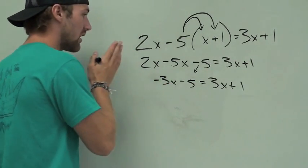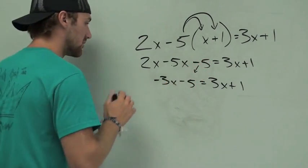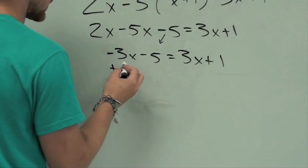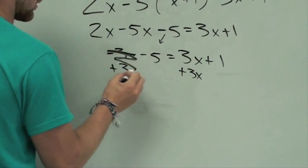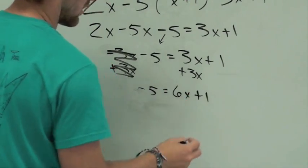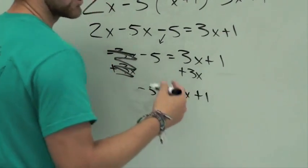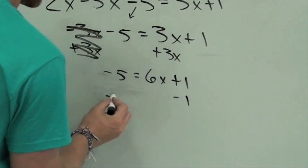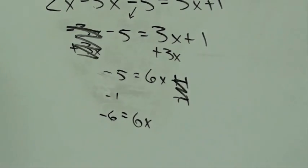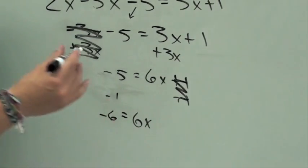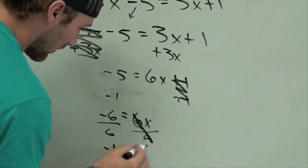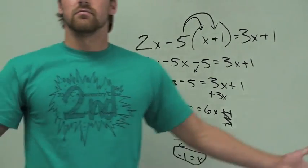Now we still have to get all our x's on one side and all our numbers on the other side. Let's put all these x's over here. The opposite of minusing 3x would be adding 3x. That cancels out because it would be 0. Negative 5 equals 6x plus 1. Get our numbers on the other side — it's a positive 1, so the opposite would be subtracting 1. That cancels. That would be negative 6 equals 6x. Last step: got to get rid of that 6. It's 6 times x, so the opposite would be divide by 6. That cancels out. It would be negative 1 equals x.